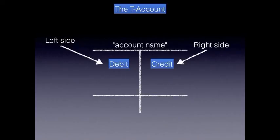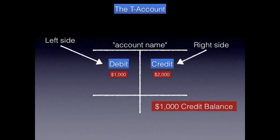For example, it doesn't matter what account we're looking at — whether it's an asset like cash or a liability like notes payable. Let's say we had a debit balance of $1,000 and our total credits equaled $2,000. Therefore, the balance in this account, because our credits are more than our debits, would be a credit balance of $1,000, since our credits are $1,000 more than our debits.